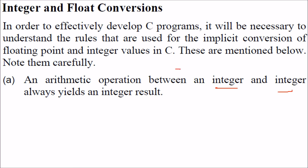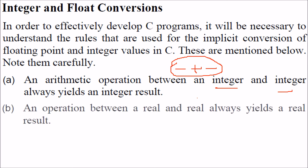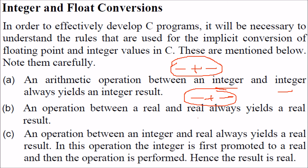If both operands are integers, they will give the result as an integer. When we have both as real, that is floating point values, they will give you a result as floating point. But when we are dealing with an integer and a real number, it will give you a real result, because the integer has a lower memory requirement than the real.